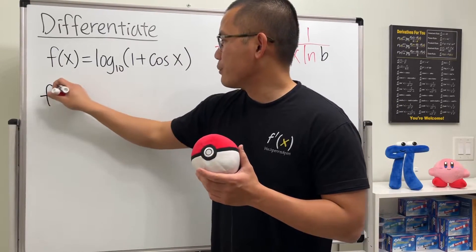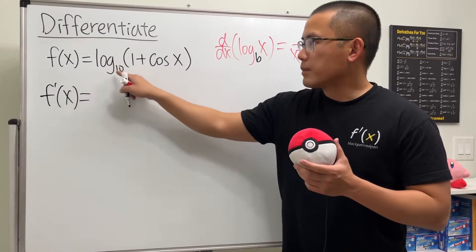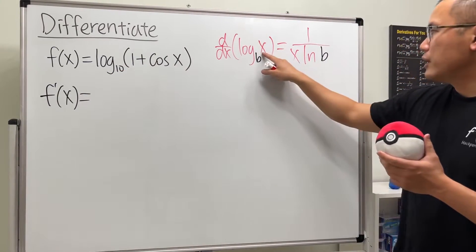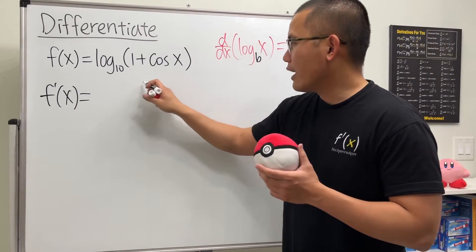Let's write down f prime of x. When we differentiate log base 10, you can just imagine this is like the box and we will have to enter this in the box. So we are going to have 1 over whatever this is on the bottom.